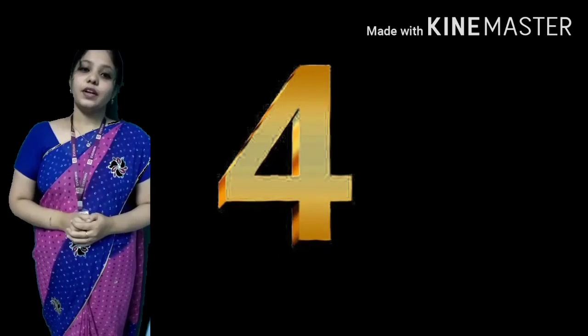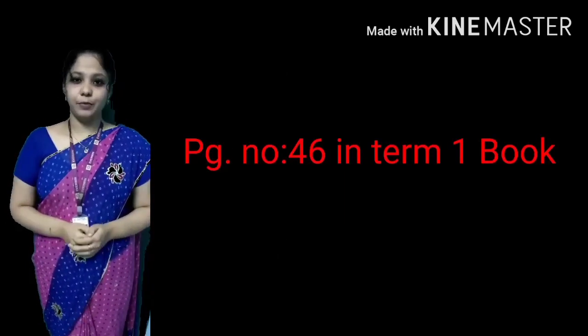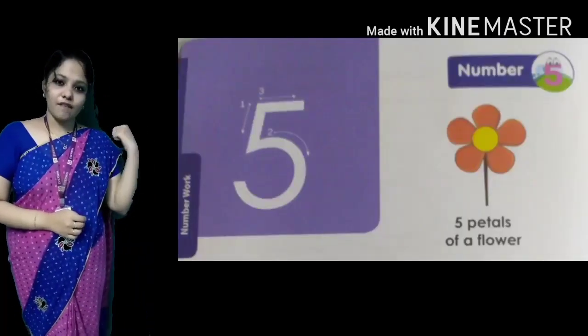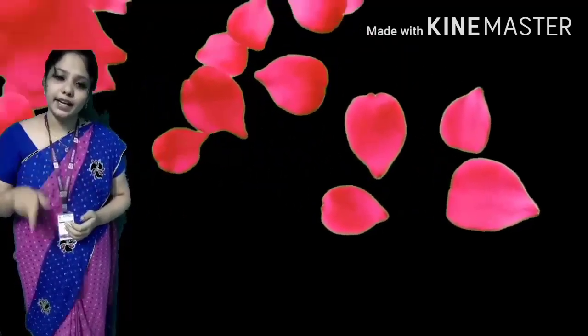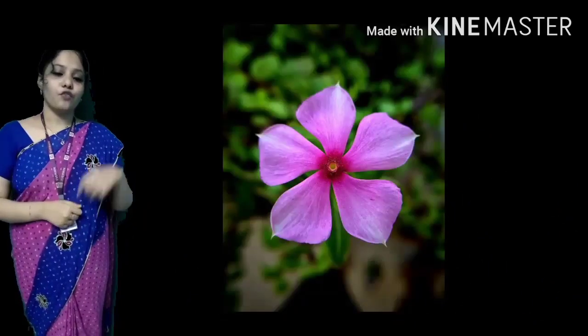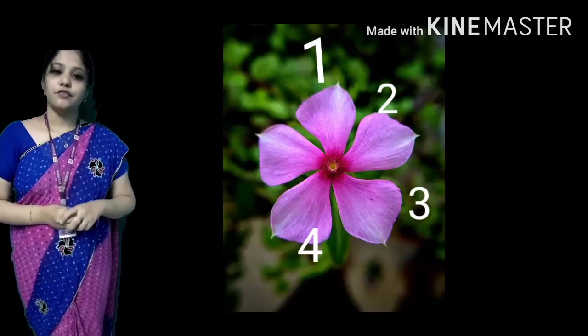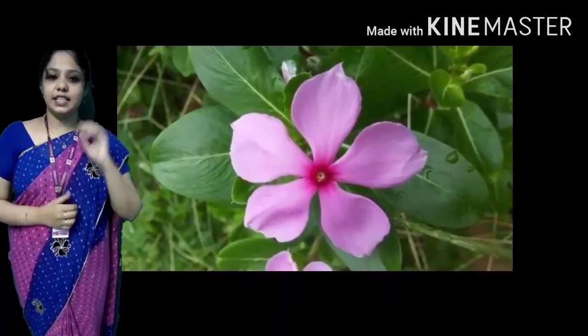Now take page number 46 in term 1 book. See here, you have a flower. How many petals are there? 1, 2, 3, 4, 5. There are 5 petals in the flower. 5 petals are there.